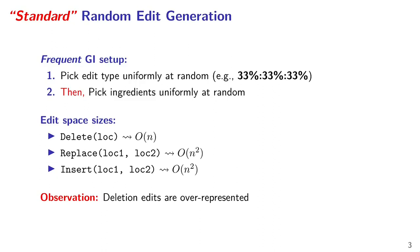In what we call the standard way to generate GI edits — due to its very frequent use — edits are created in two steps. First, the type of edit is chosen at random, so with the usual three types, each has probability one-third. Then genetic material is sampled uniformly at random to construct the edit. While this strategy seems uniform, if we look closer at the number of possible edits of each type, not all edits are generated equally. The number of possible deletions grows linearly, while replacements or insertions grow quadratically, meaning edits from smaller edit spaces have a larger probability of being generated. With three edit types, deletion edits are way overrepresented.